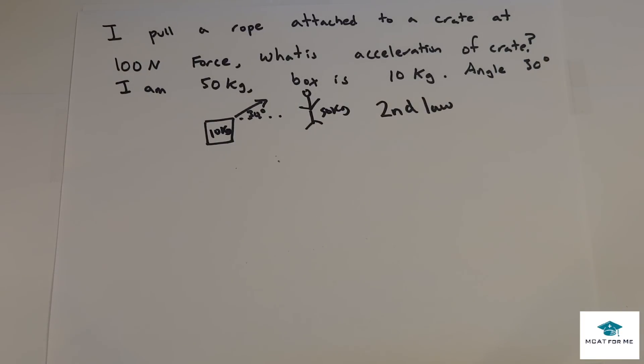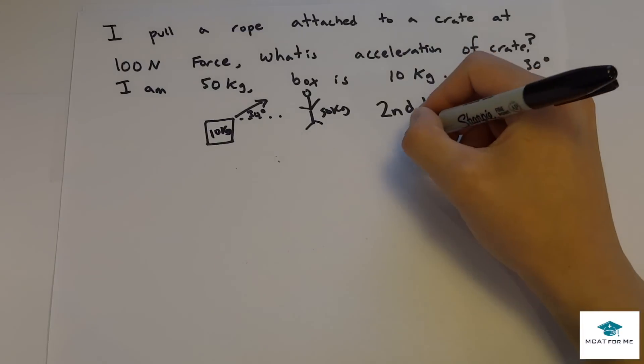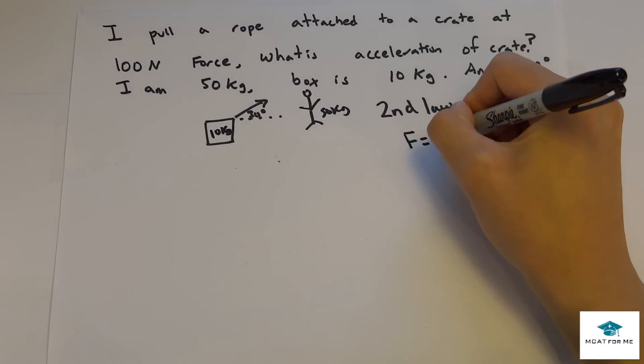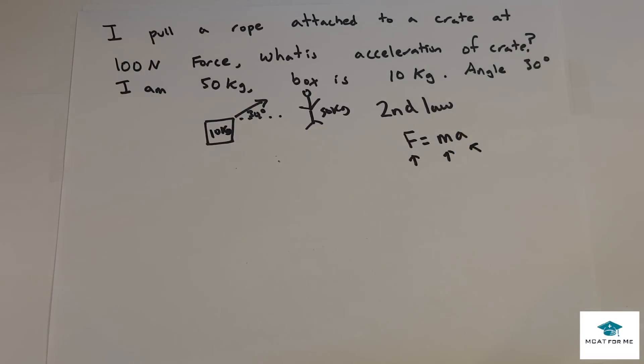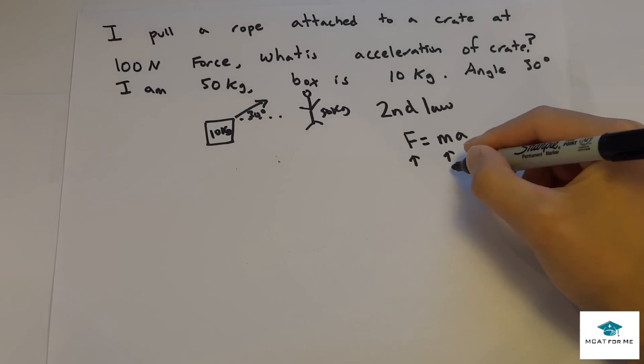So the first thing we want to do is we want to figure out what equation do we need to know. We need to know F equals ma because we're given some type of force, we're given some type of mass, and we want to find this acceleration. So this is what we want to find and these are the ones that we're given.